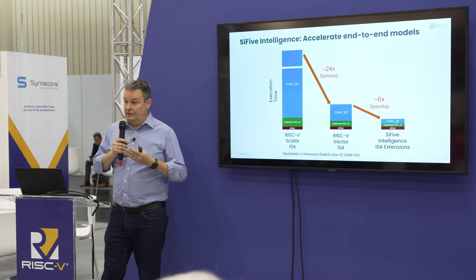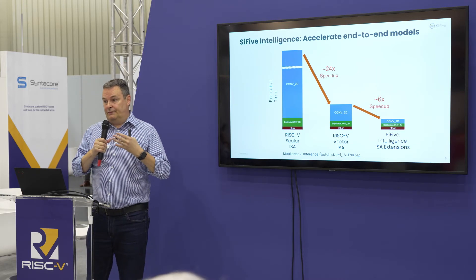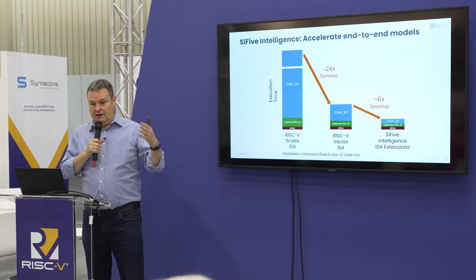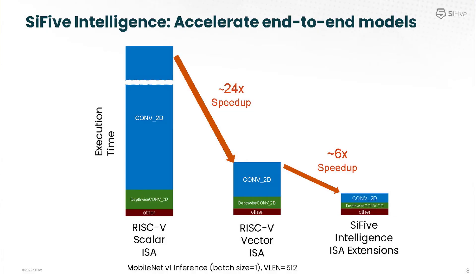This slide shows a neural network model benchmark illustrating the performance difference between pure scalar — something like an essential U7 core, an eight-stage pipeline high-performance processor — versus moving to an X280. We've seen 24 times the performance of the vector processor over a scalar processor, showing why vector is so important for particular application types. With the SiFive Intelligence Extensions specifically targeting AI and ML on the X280, you get a further six times improvement in performance. These benchmarks were run on MobileNet V1 inference.